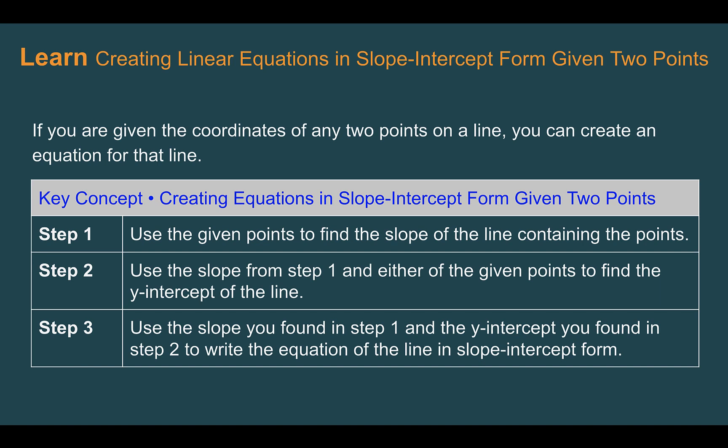Let's learn creating linear equations in slope-intercept form given two points. If you're given the coordinates of any two points on a line, you can also create an equation for that line. Here we have one extra step. First, we need to figure out the slope using the two points. So this time we're not given the slope, we need to figure it out. Then once we have the slope, we're going to do what we just did to figure out the y-intercept. Then once we have the slope and the y-intercept, we can plug them into slope-intercept form to get our final equation.